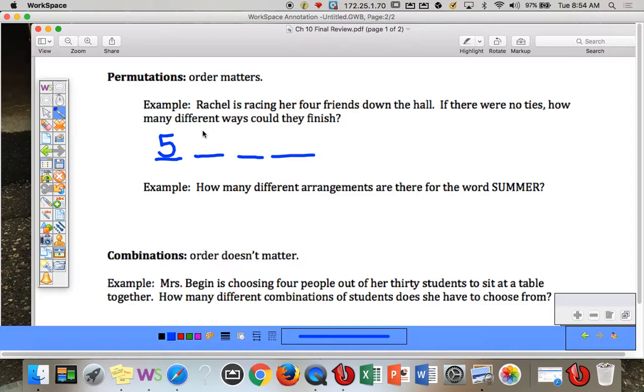Five people that could get first place. Four people that could get second. Three people that could get third. Two people that could get fourth. And then one person that would get last place. So one way to write this is five factorial. You could do your permutation button. Out of five people, you want all five.